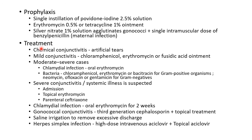For treatment: chemical conjunctivitis is treated with artificial tears. Mild conjunctivitis is treated with topical chloramphenicol, erythromycin, or fusidic acid ointment. Moderate to severe chlamydial infection requires oral erythromycin. Other bacterial infections are treated with topical chloramphenicol, erythromycin, or bacitracin for gram-positive organisms, and neomycin, ofloxacin, or gentamicin for gram-negative organisms. Severe conjunctivitis or systemic illness requires admission, topical erythromycin, and parenteral ceftriaxone empirically. For chlamydial infection, the treatment of choice is oral erythromycin for 2 weeks. For gonococcal conjunctivitis, 3rd generation cephalosporin plus topical treatment. Saline irrigation removes excessive discharge. For herpes simplex infection, high dose intravenous acyclovir plus topical acyclovir is given.